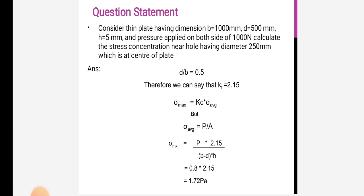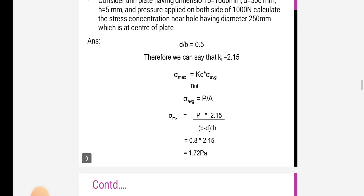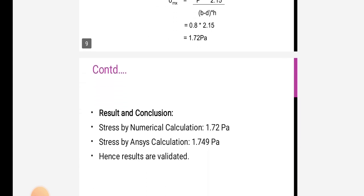We can solve as D/B = 0.5. Therefore, we can say that KT = 2.15. σmax = KC × σavg, but σavg = P/A. So, σmax = P × 2.15 / (B-D) × H = 0.8 × 2.15 = 1.72 Pa.